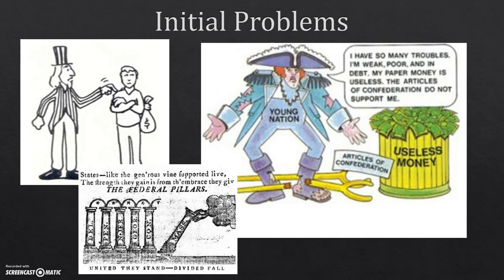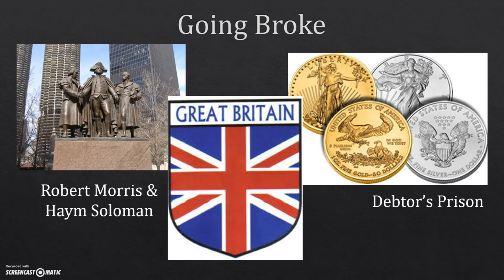Going back to the taxation problem: since Congress couldn't levy taxes and states weren't contributing their full share, they couldn't pay off their war debt. When the war was over, states were asked to help pay it off, but combining everyone's contributions they only collected 17 percent of what they actually needed. Because of this, they couldn't support an army financially, and many soldiers went unpaid even after the war — it took a very long time for military families to collect the money they had earned.